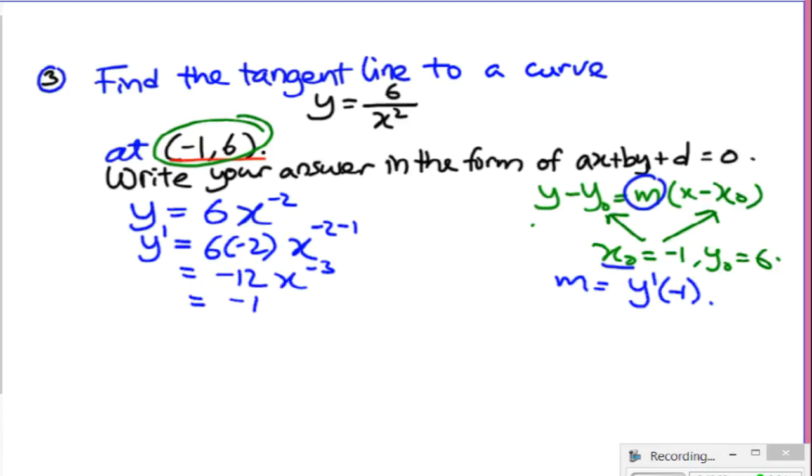Evaluating this at negative 1 means negative 12 divided by negative 1 raised to the power of 3. That is negative 12 divided by negative 1, which is just 12.